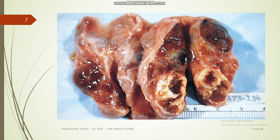Now this is a gross picture. Try to practice describing the specimen. You might say it's a brown-colored, multi-nodular, multi-lobulated specimen. There are areas of different colors as well. The cursor is pointing to various nodules — you can see there are variable-sized nodules, and the shiny areas represent the colloid we talked about.